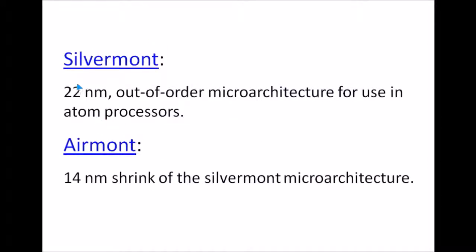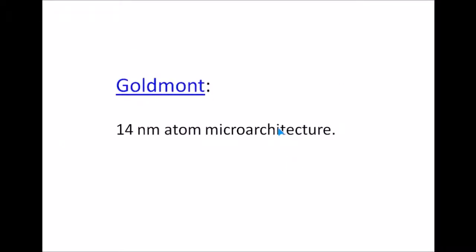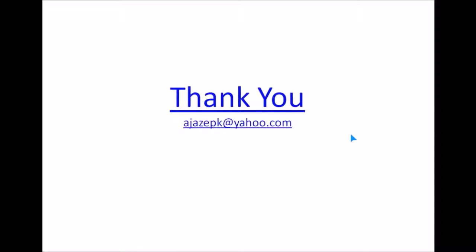Saltwell is the 32 nanometer shrink of the Bonnell architecture. Silvermont is a 22 nanometer out-of-order microarchitecture for Atom processors. Airmont is the 14 nanometer shrink of the Silvermont microarchitecture. Goldmont is a 14 nanometer Atom microarchitecture. This journey shows how Intel has continuously been squeezing nanometer technology to produce more powerful microprocessors.